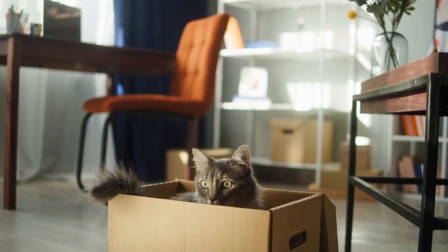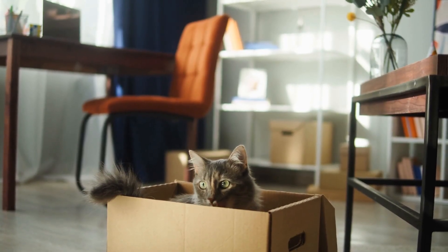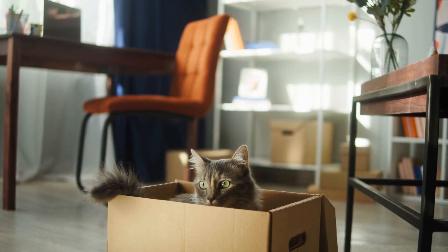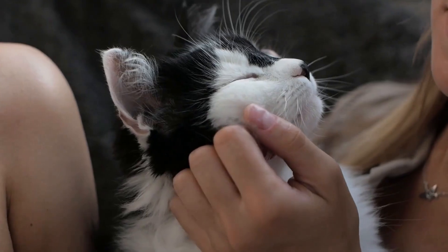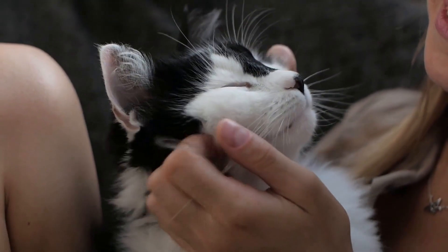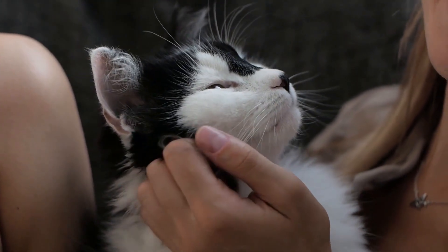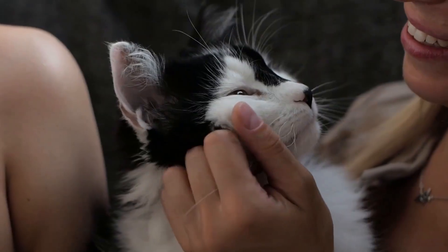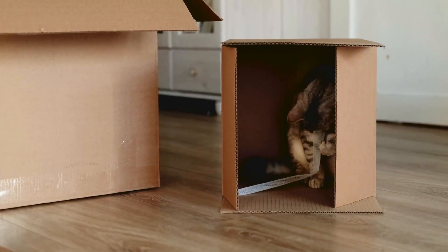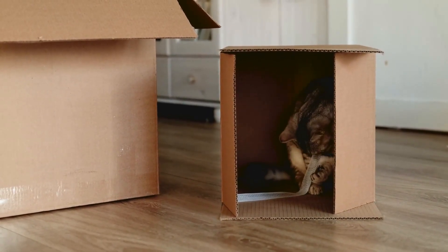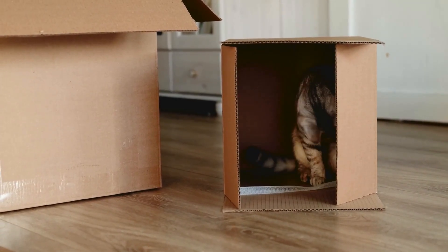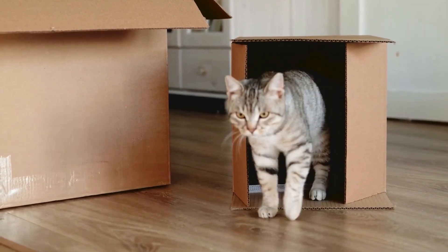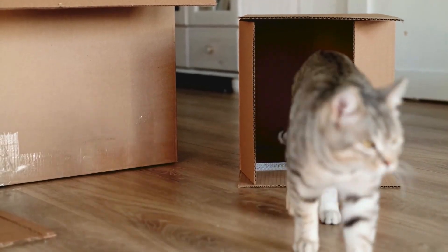Consider the famous Schrodinger's Cat thought experiment. A cat in a box with a quantum-triggered poison is supposedly both alive and dead until observed. The standard interpretation says the cat exists in superposition until measurement collapses it into one state. But many-worlds says both outcomes happen. In one universe, you open the box to find a living cat. In another, a dead one. The cat was never in superposition. There were always two cats in two universes.